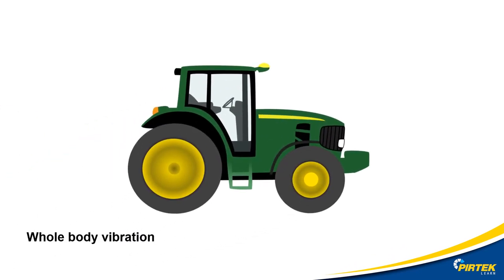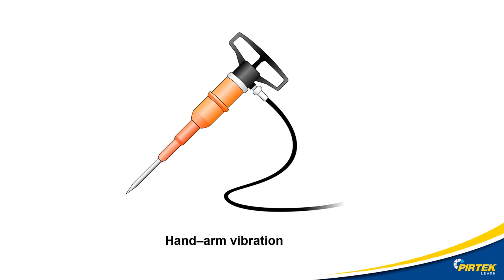Vibration is another force that can cause injury. Whole body vibration occurs when vibration is transmitted through the whole body, usually via a supporting surface like a seat or a floor in heavy machinery or equipment. Examples include operating mobile plant such as heavy moving equipment, or driving a vehicle over rough terrain. Hand-arm vibration occurs when vibration is transferred through a vibrating tool, steering wheel or controls in heavy machinery. Some examples: impact wrenches, chainsaws, jack hammers, grinders, drills, vibrating compacting equipment, even nail guns.